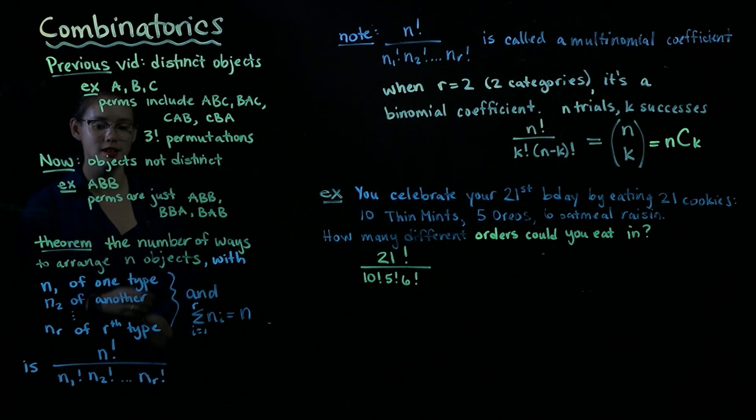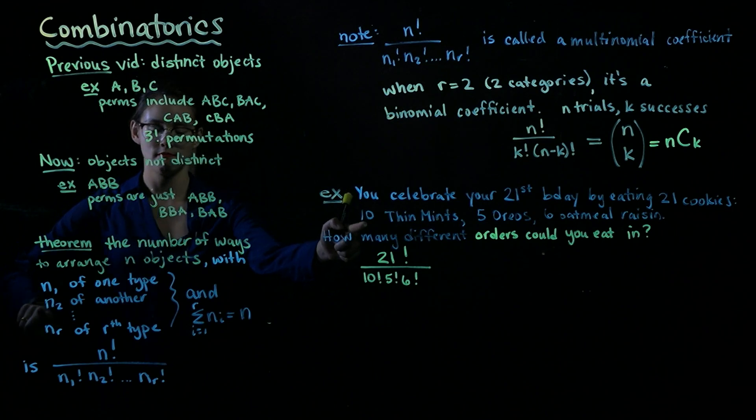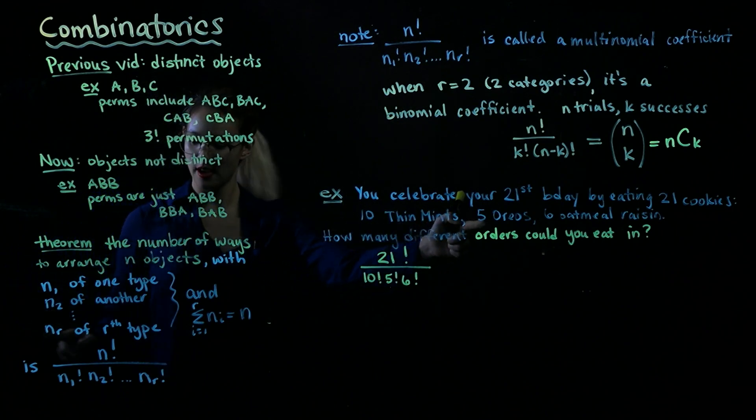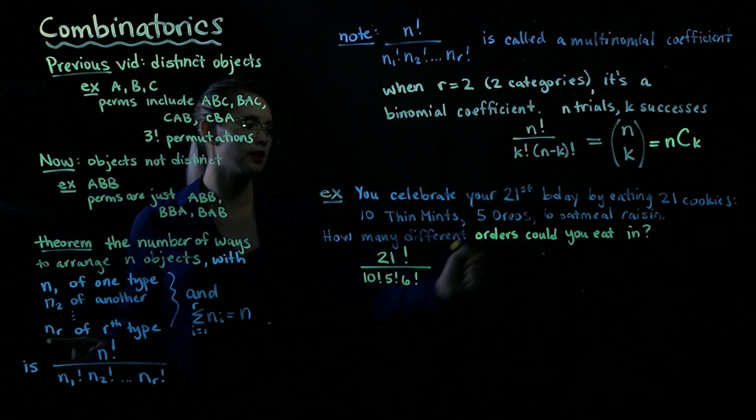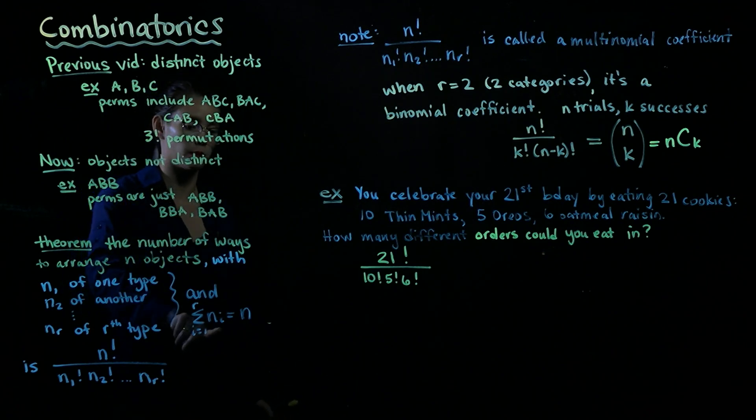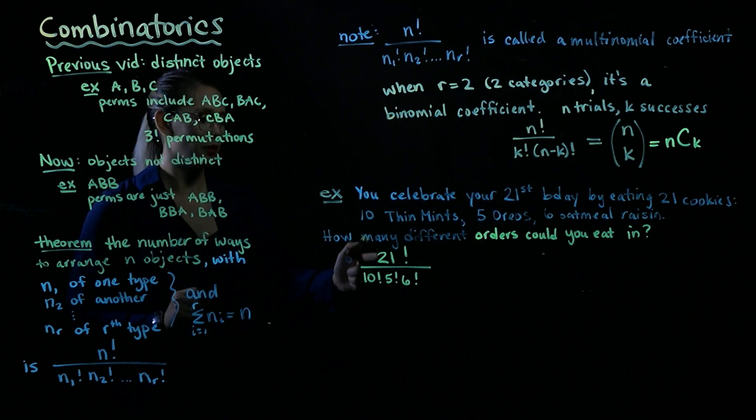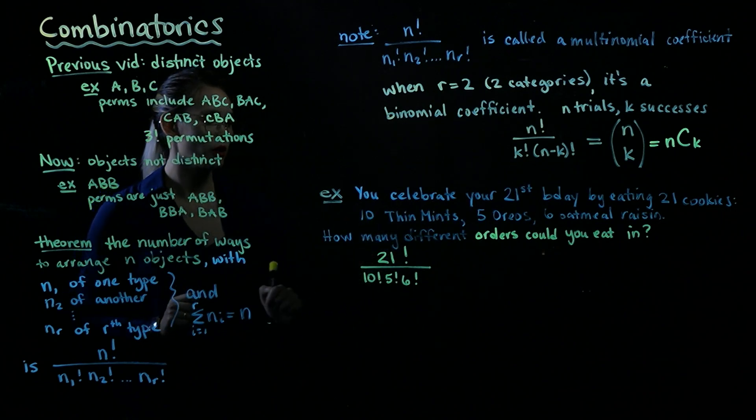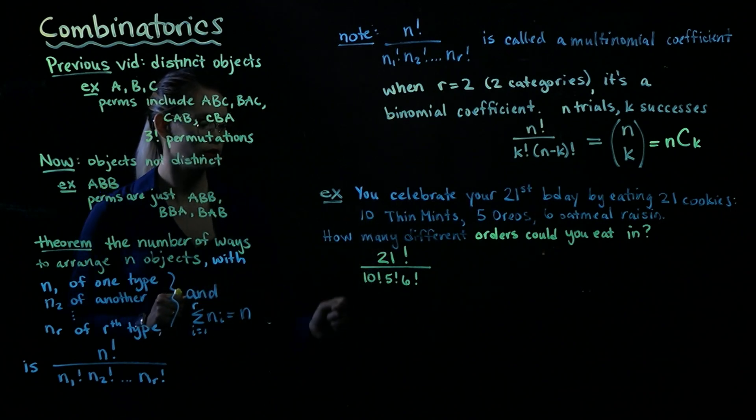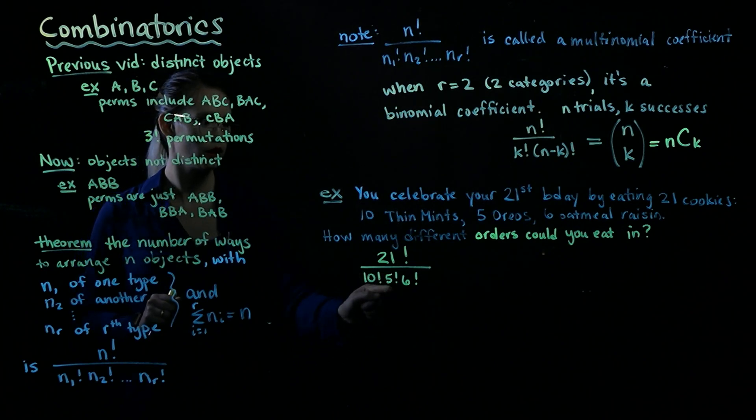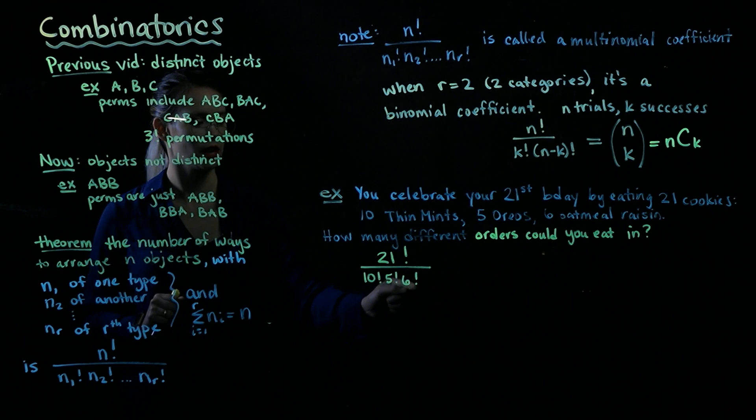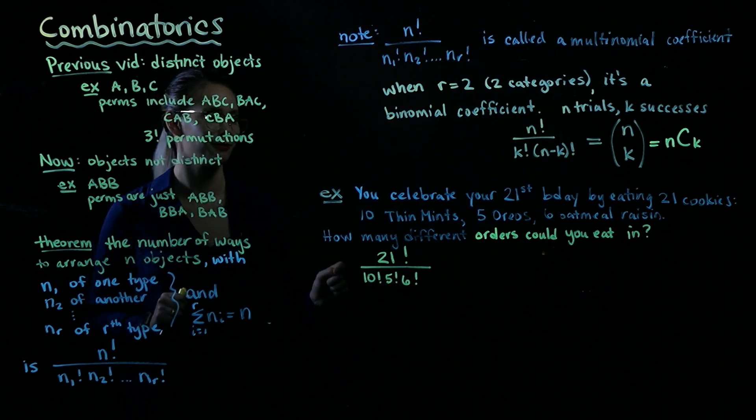So how many different orders could we eat in? Well, we have n1 equals 10, n2 equals 5, and then n3 is equal to 6. And then the total n, we get that just by adding up all of these subcategories, is the total n is 21. So we have 21 factorial divided by the number of thin mints factorial times the number of Oreos factorial times the number of oatmeal raisin cookies factorial.